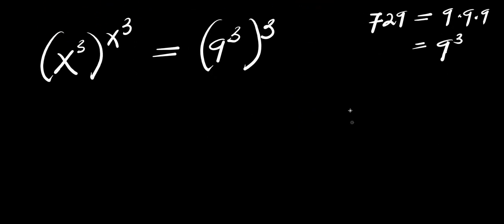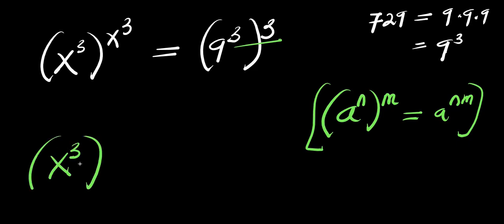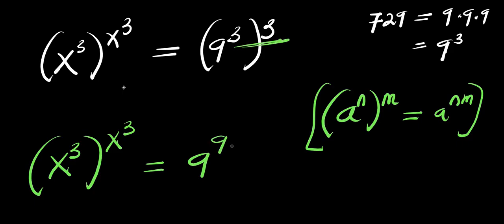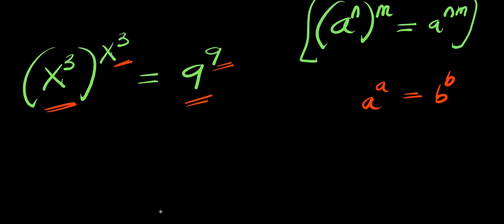Going back to the identity: a to the power of n, raised to the power of n, equals a to the power of n times n. I have to multiply the 3 out. So x to the power of 3, raised to the power of x to the power of 3, equals 9 raised to the power of 3 times 3. At this point, both sides are in the form a to the power of a equals b to the power of b, which simply means that a equals b.